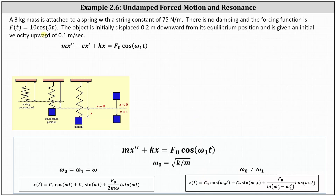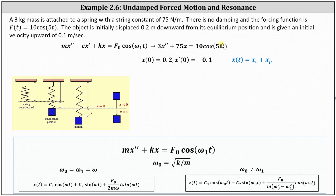Going back to our problem, m = 3, k = 75, and because the forcing function is F(t) = 10 cos(5t), we have the differential equation 3x'' + 75x = 10 cos(5t). The initial displacement is 0.2 meters downward, so x(0) = +0.2. The initial velocity is upward at 0.1 meters per second, so x'(0) = −0.1.